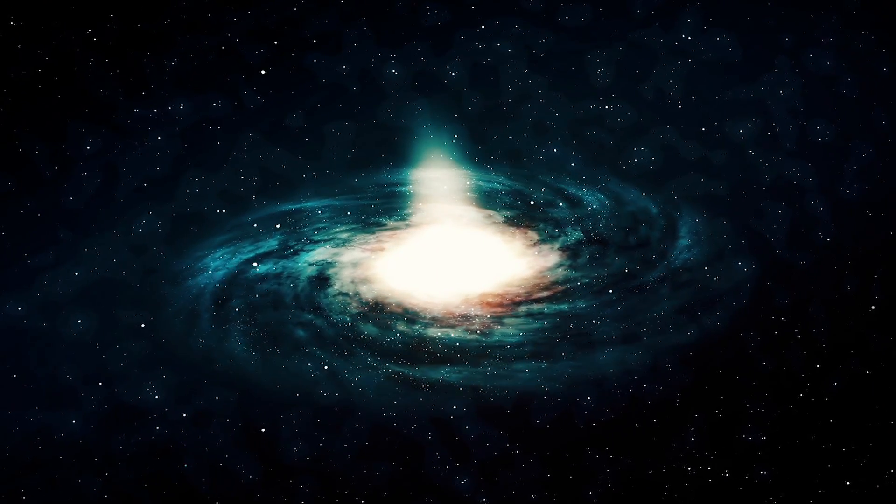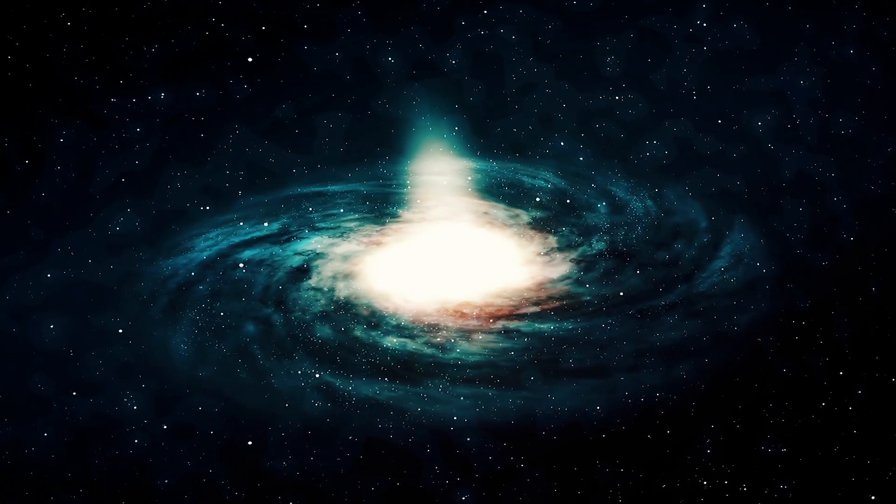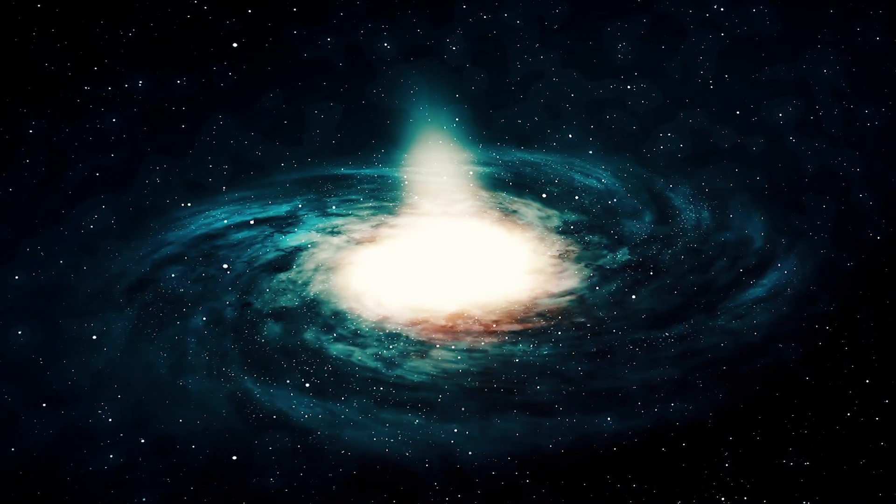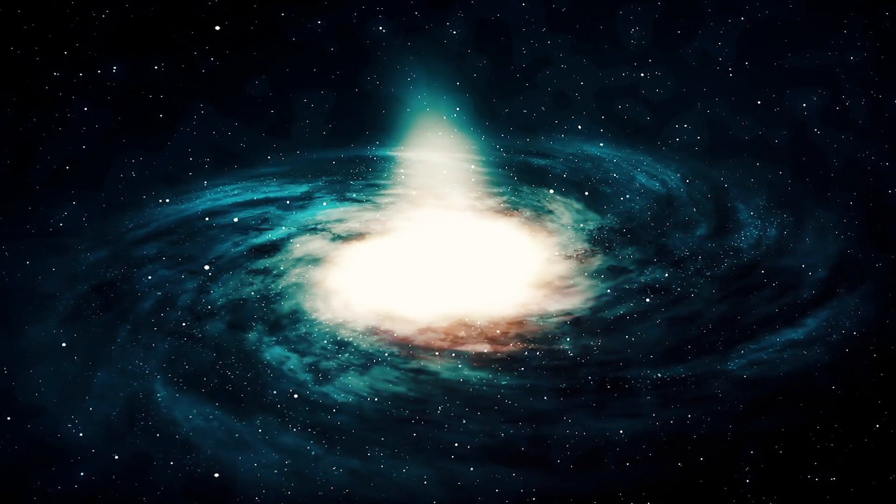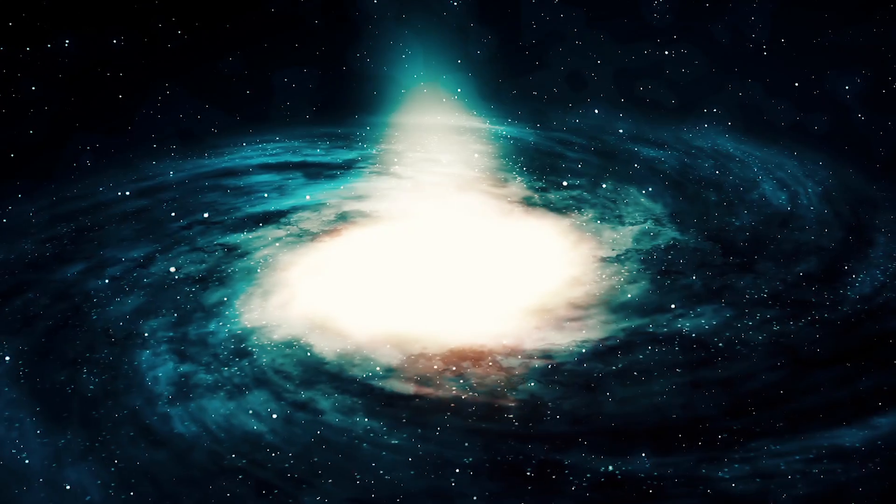We know there's dark matter in a galaxy because it makes the matter in that galaxy swirl faster than it would if the observable matter was the only matter in it.